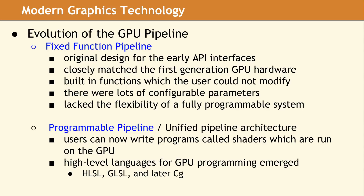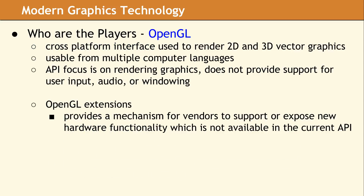When the API moved to the programmable pipeline, shaders were still required, but now they are supplied by the user. To resolve the problems of programming shaders in a maintainable way, high-level shader languages were added in Direct3D 9 and OpenGL 2. For an application to communicate with the graphics hardware, you need a software interface. These are implemented as libraries. However, the functionality exposed by those libraries is commonly referred to as an API.